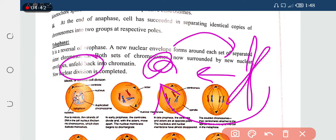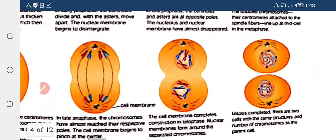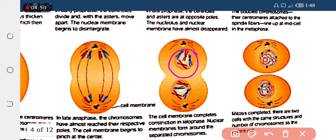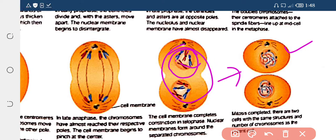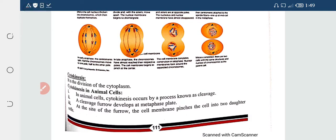Now when all of this happens, that means nuclear division is completed. You can see chromosomes and all of that have been formed. Around each cell, the chromosomal material converts back into a thread-like structure, and the nuclear envelope is also reformed around it. In this way, division of the nucleus is completed, and next we have cytokinesis, which we will discuss in the next lecture.